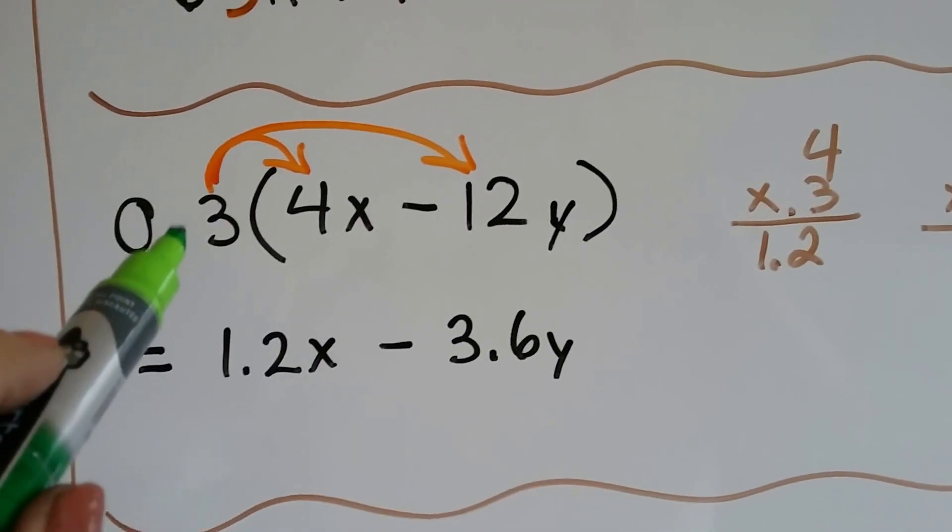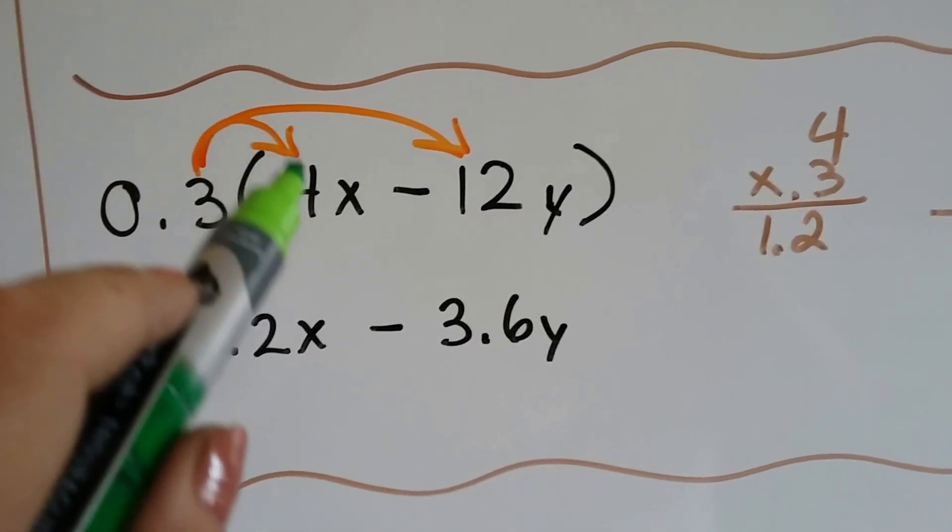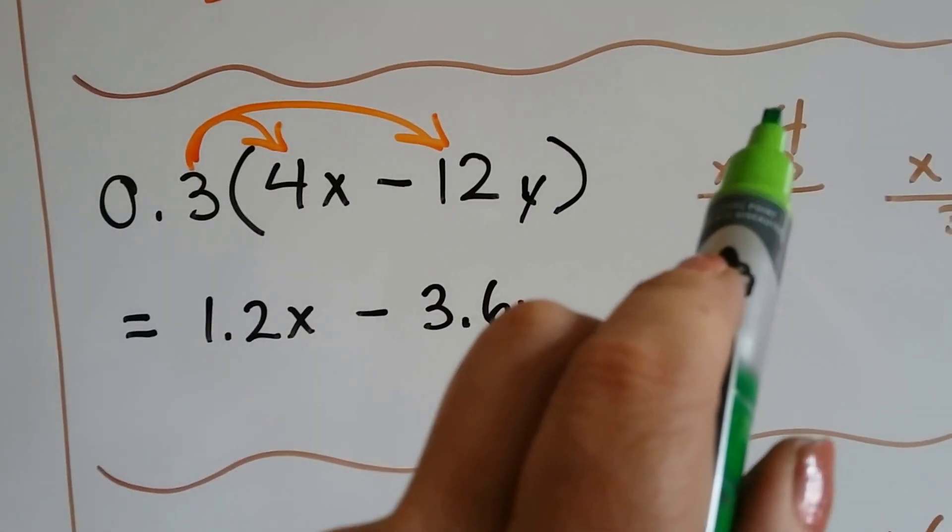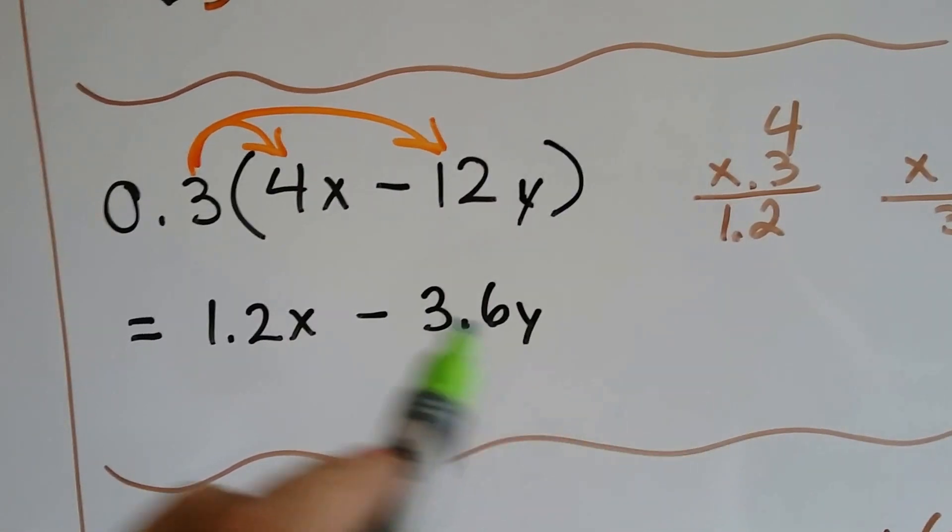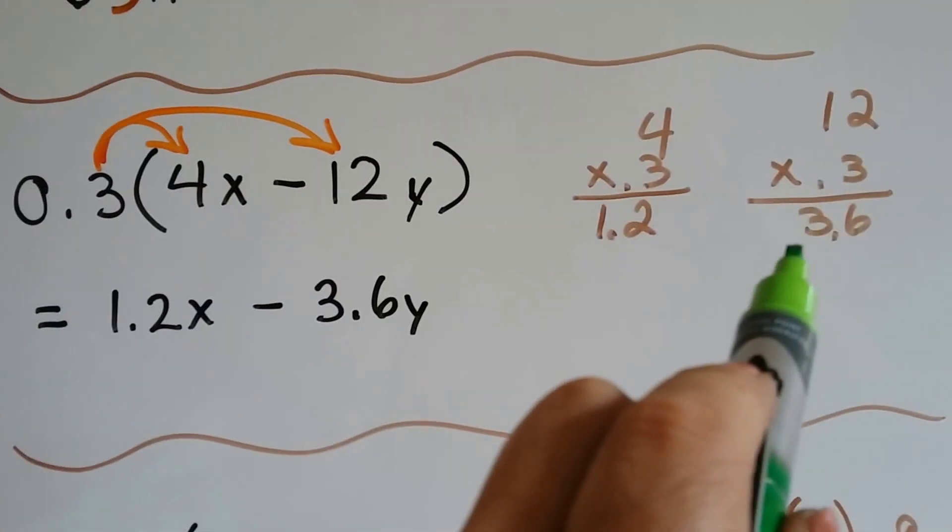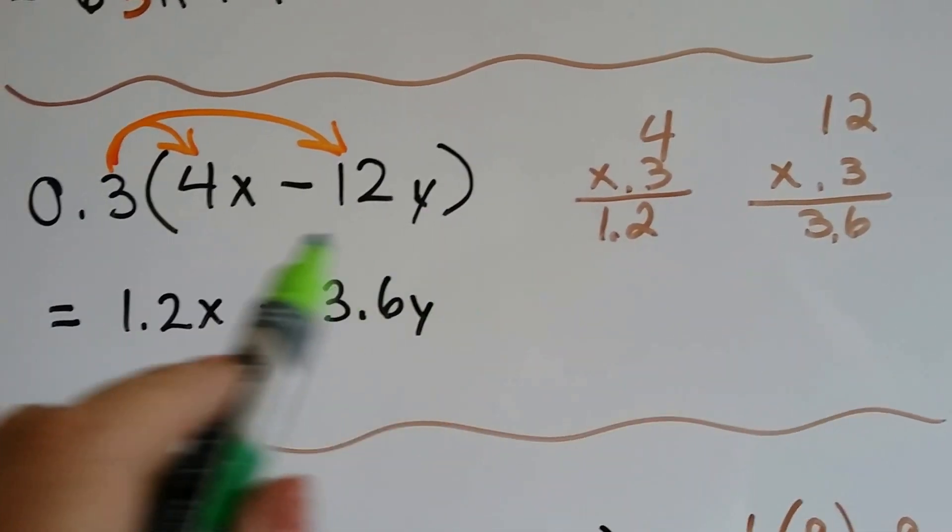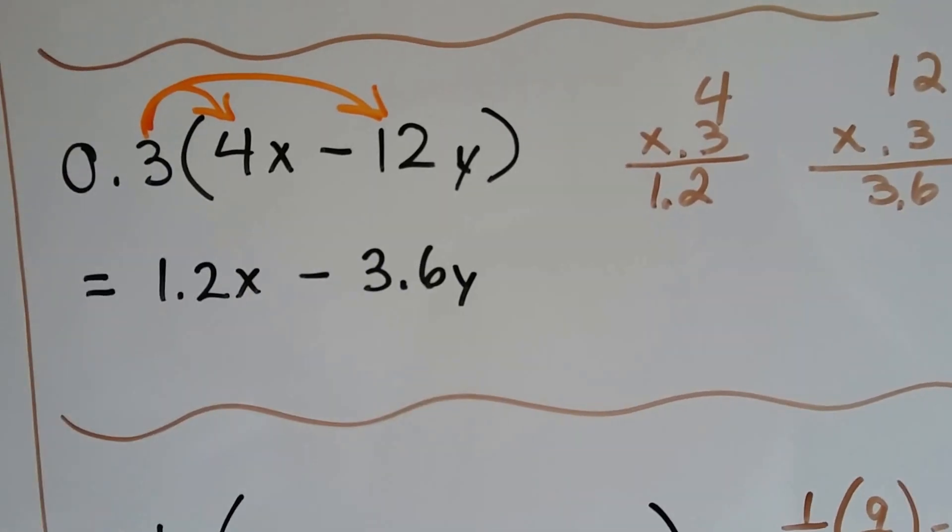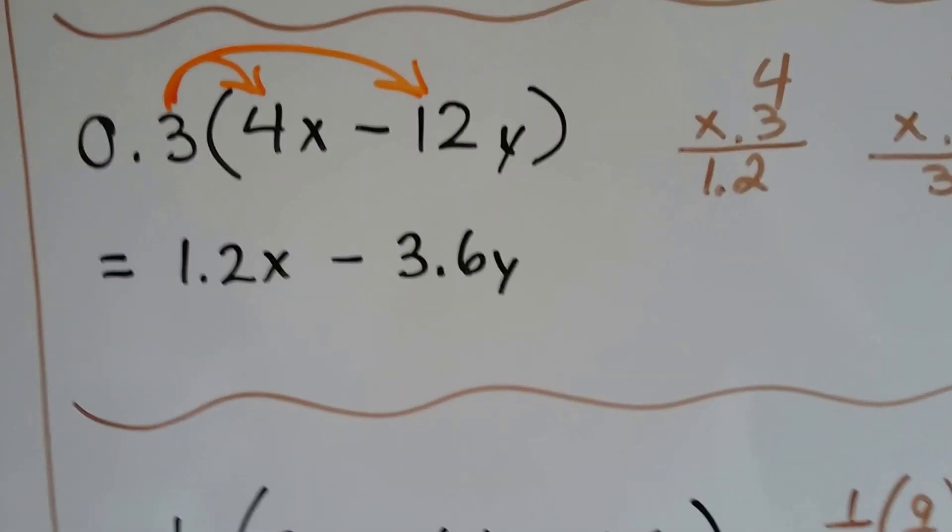If we've got decimals like .03, we're going to multiply it to the 4X. That's going to give us 1.2X. 4 times .3 is 1.2. And then .3 times 12 is 3.6. So that's going to be 3.6Y and we're going to bring our subtraction sign in. 1.2X minus 3.6Y.